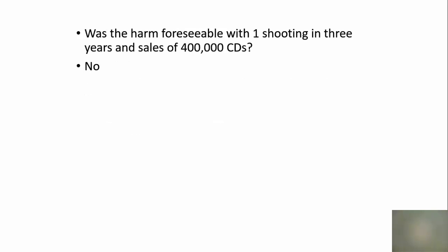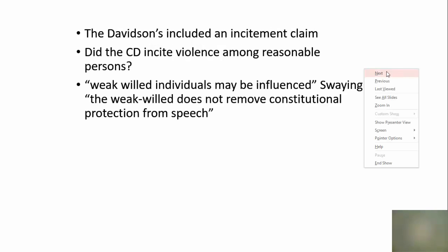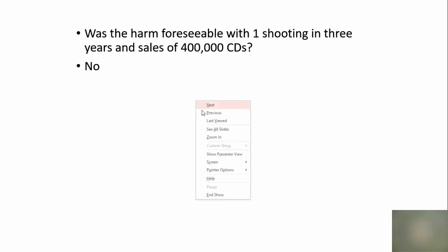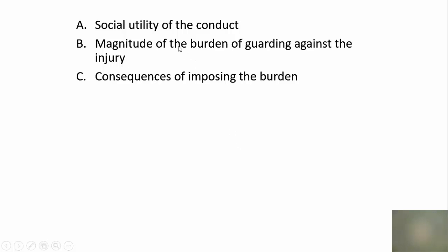We don't have two of the necessary elements of the first three-part test. The risk of actual harm — somebody being killed — is significant, but you can't win the test with just one out of three. For purposes of the exam, you must do both sides of the six-part test. So you look at the first three and then you have to look at the second three.